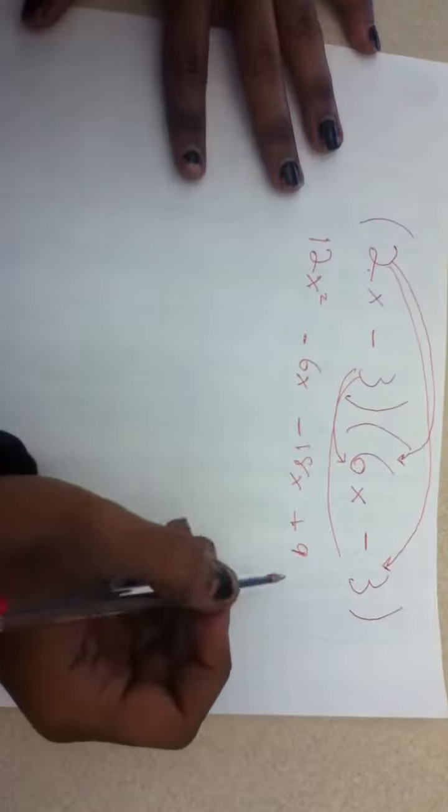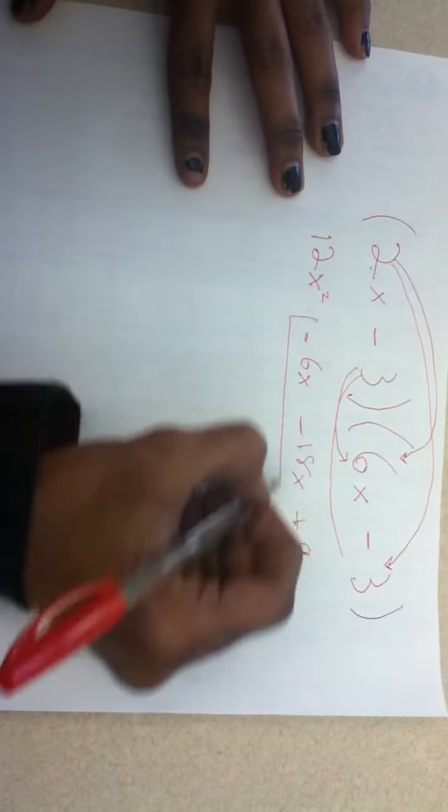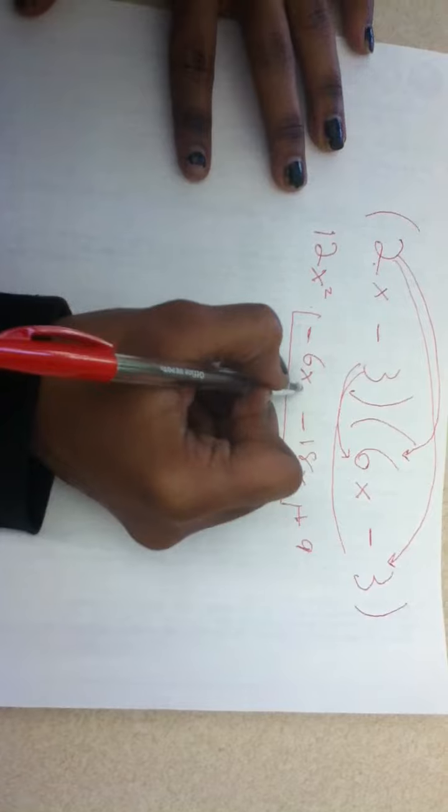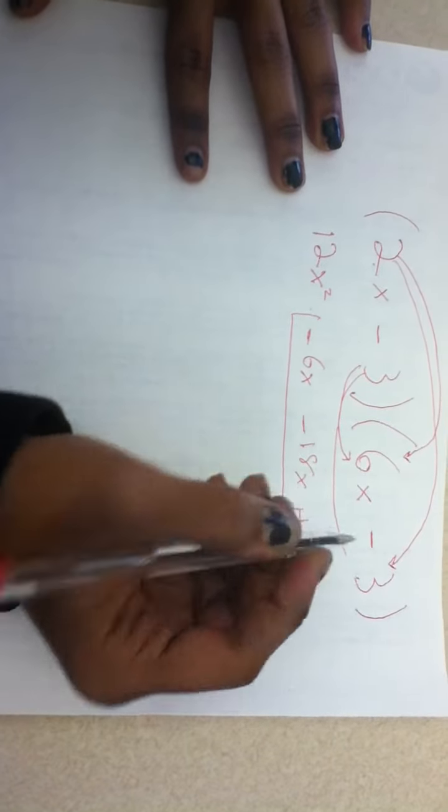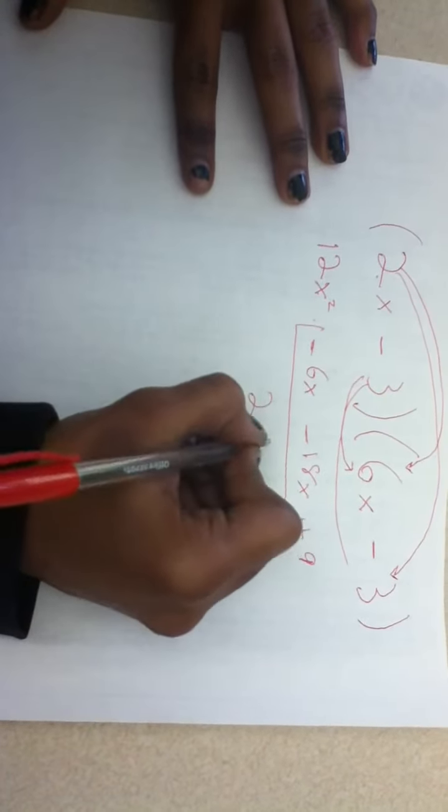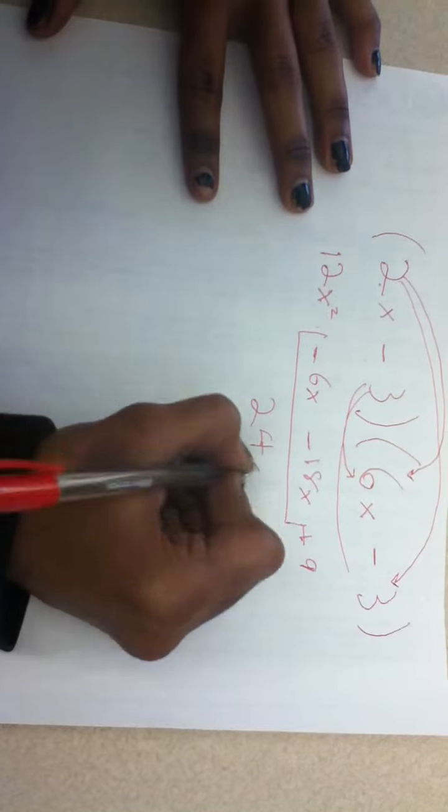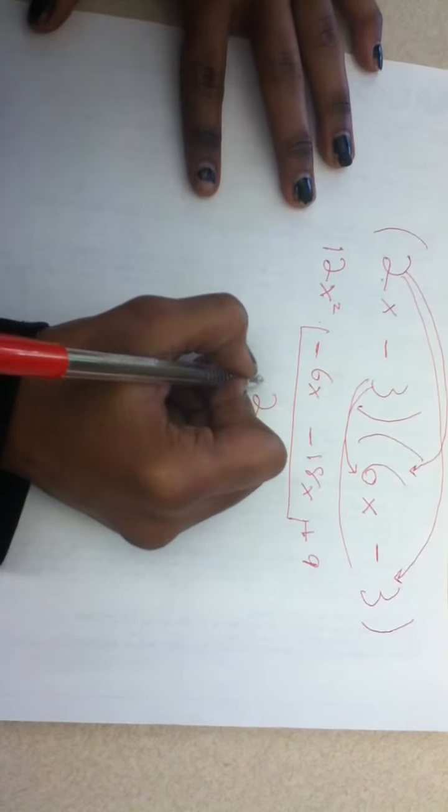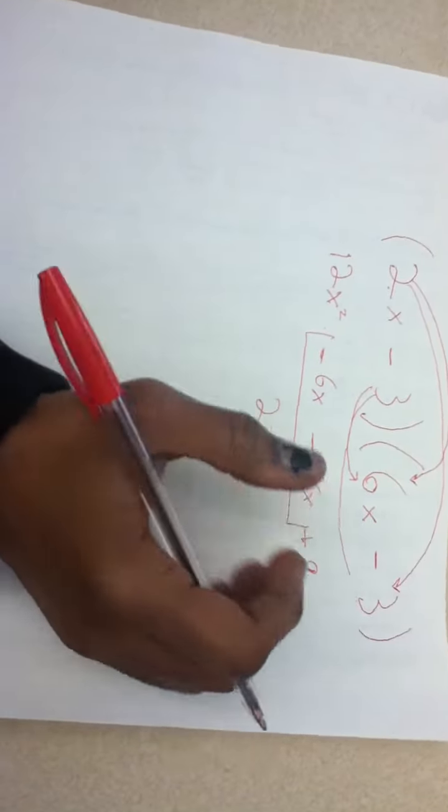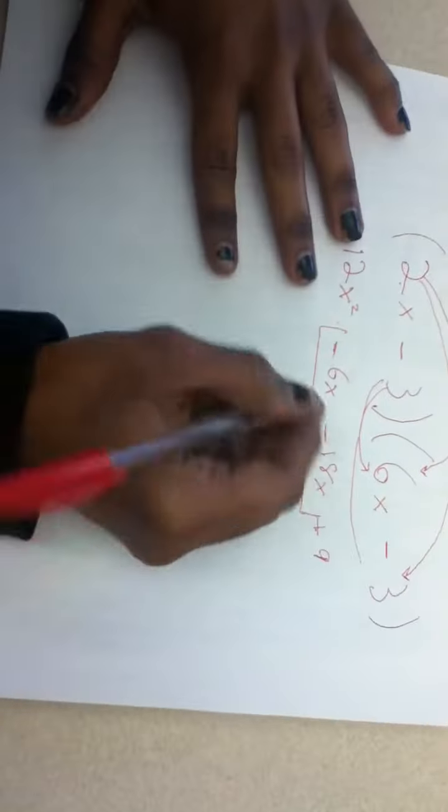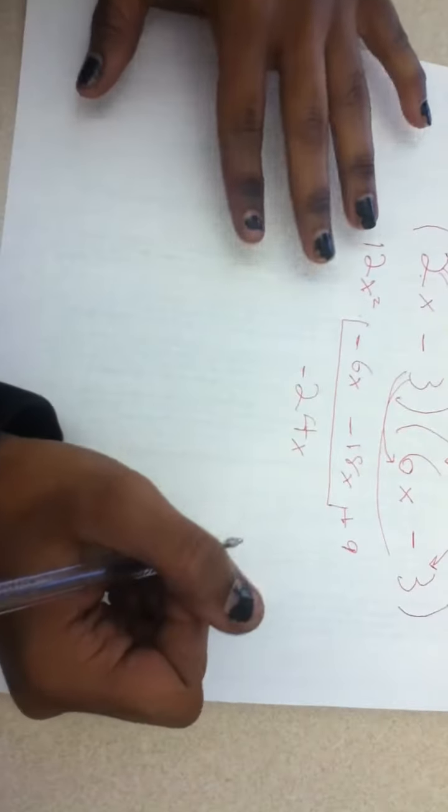Now we just have to combine alike terms, which is the negative 6x plus the negative 18x, which will give us negative 24x.